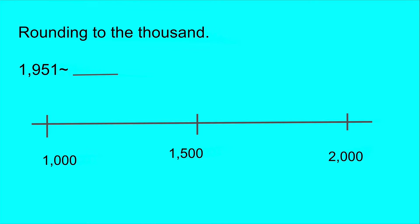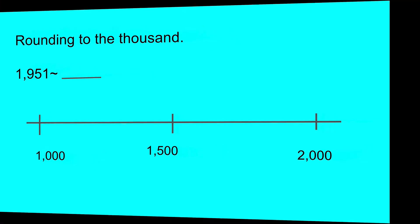Okay, think, where is 1,951 on the number line? Well, it is after 1,500 so it's closer to 2,000. So we would round it to 2,000.